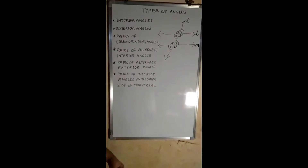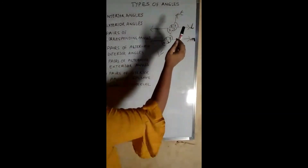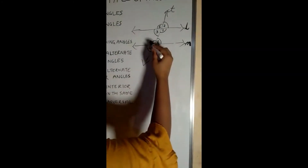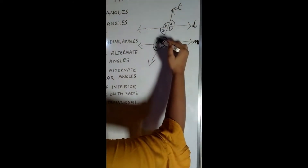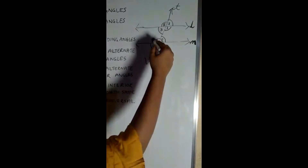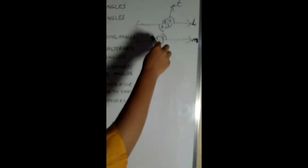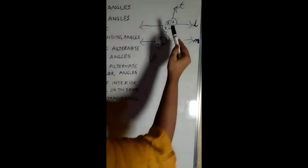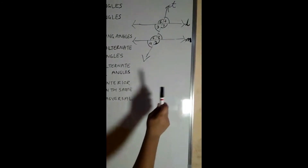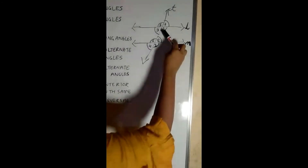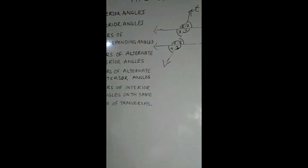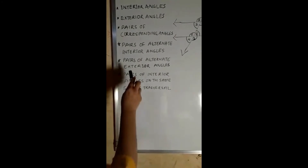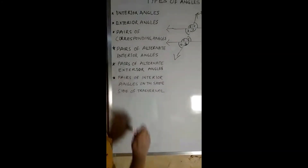Now let us study about alternate interior angles. In this figure, we know that there are 4 interior angles. The angles which are across or opposite to each other are called alternate interior angles. 1 and 6 are an example of alternate interior angles, and 3 and 8 are also an example of alternate interior angles.